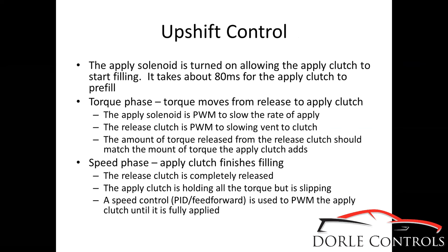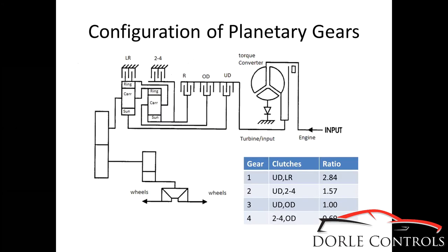The last thing we're going to talk about is upshift control. Two clutches on define a gear. If you have one clutch on, you're in neutral. If you have three clutches on, you're burning up one of the clutches and you've probably locked up the transmission. So on a 2-3 shift, when you do a shift, you have one clutch that gets released, one clutch that turns on, and one clutch that stays on. We're keeping the underdrive on, releasing the 2-4, and applying the OD. We call the releasing clutch the release clutch and the one being applied the apply clutch.